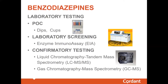Then finally, there's confirmatory testing, and there are two techniques used. Liquid chromatography and mass spectrometry, which is the technology we use in all of the Cordant family of drugs. Some other laboratories will use gas chromatography mass spectrometry. Both are acceptable confirmatory methods.